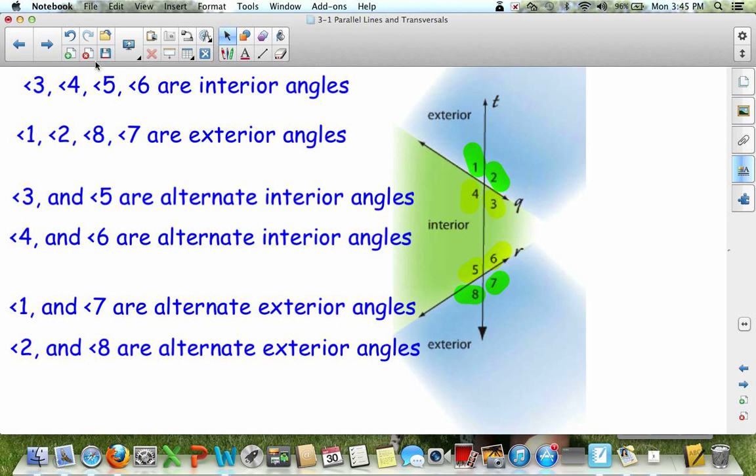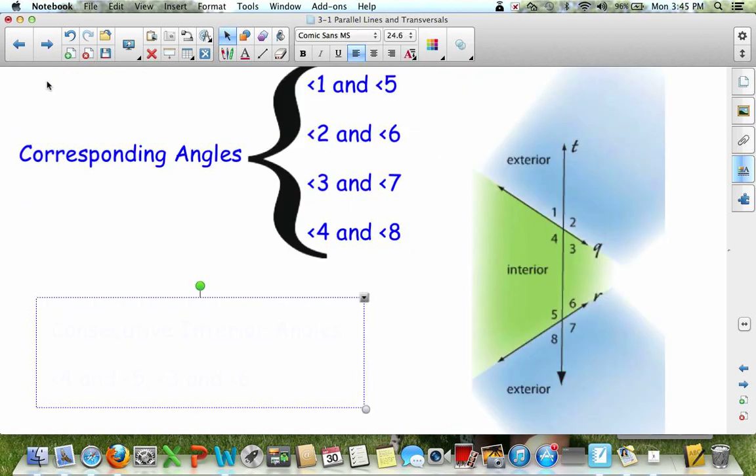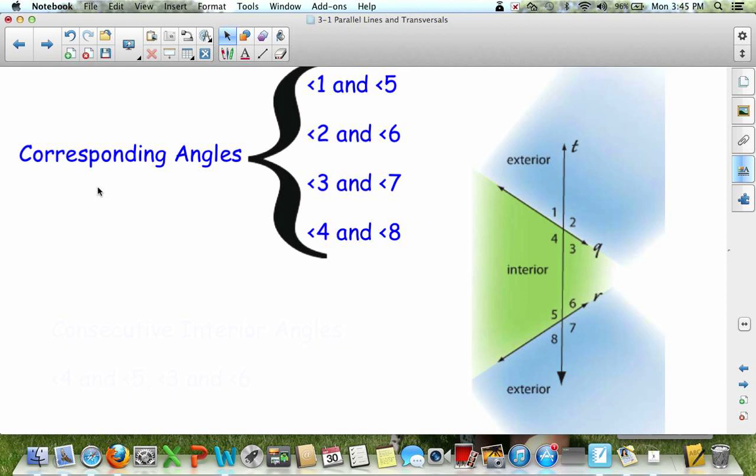Okay, we're going to continue with this picture. And we also have corresponding angles. Corresponding angles, if you notice, 1 and 5 are corresponding because they are on the same side of each line, on the upper left and the upper left of each line, and the transversal.